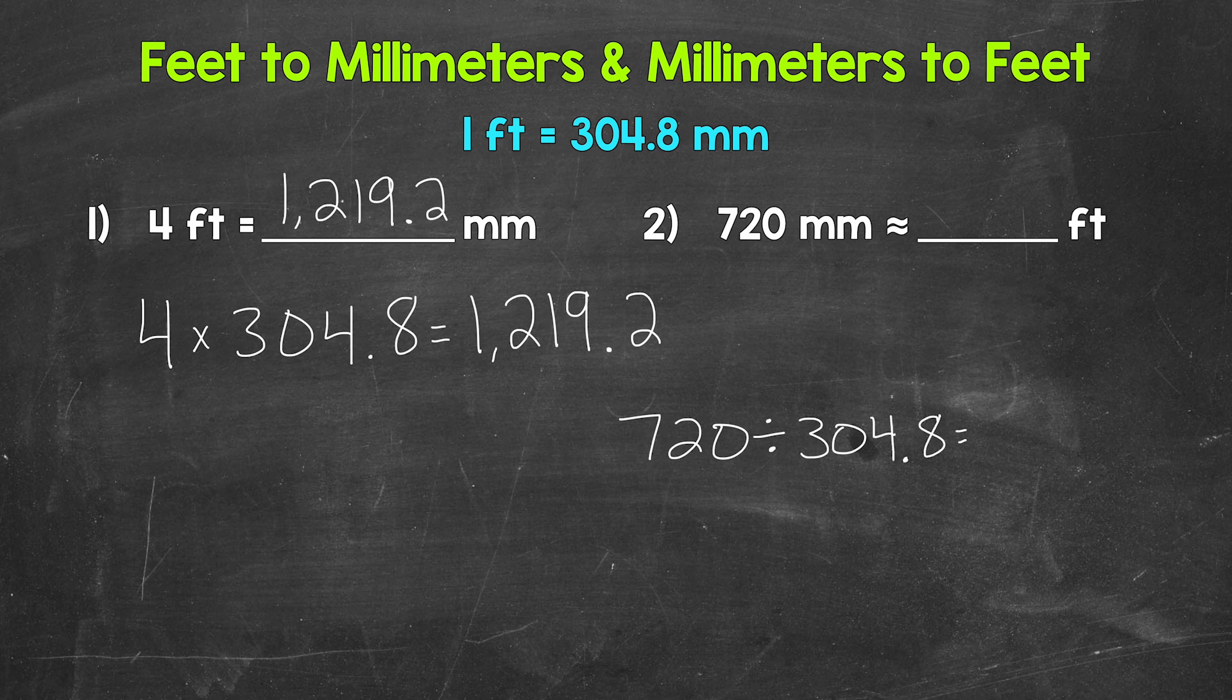When we convert from millimeters to feet, we divide by 304.8. Now 720 divided by 304.8 gives us 2.362, and this decimal continues on. So I'm going to cut it off after the thousandths and round to the hundredths.